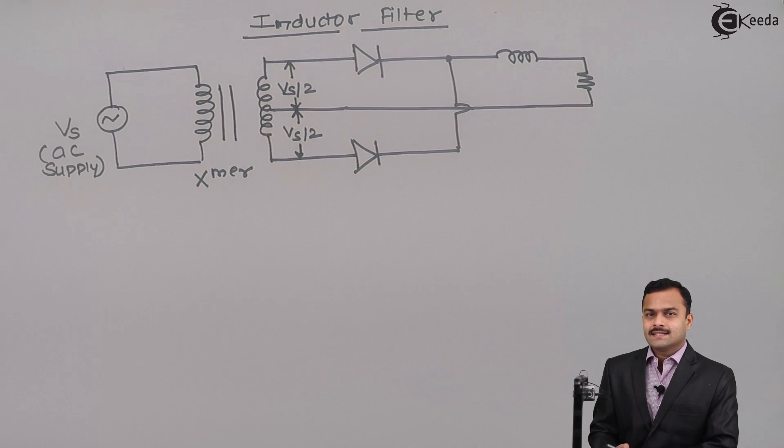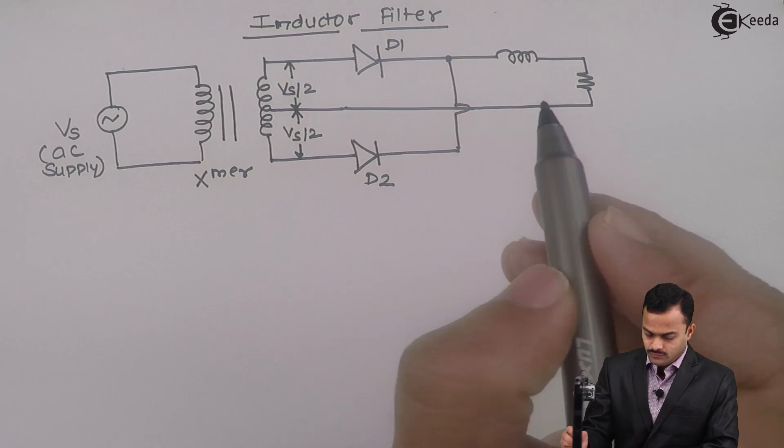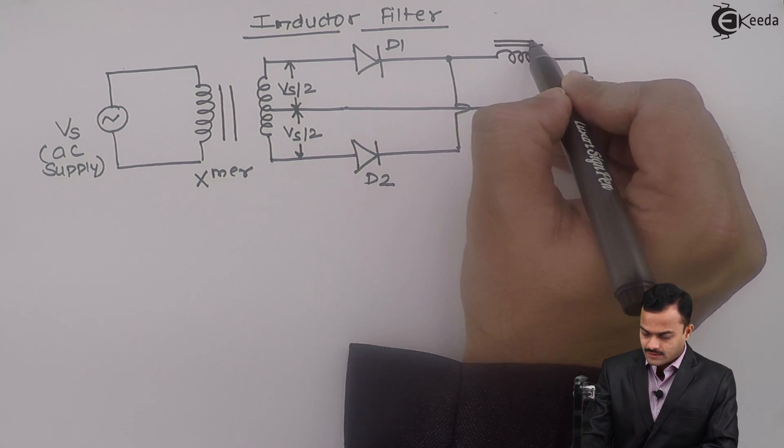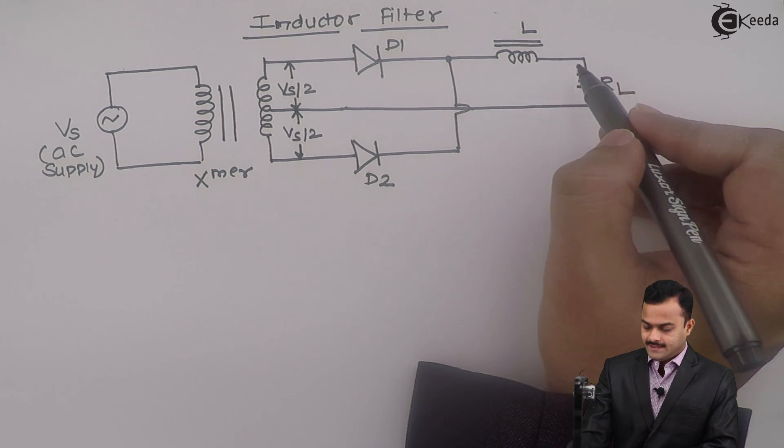It is a center tap full wave rectifier, diode D1, D2, and here we are having an inductor filter L. Load resistance connected in series with it.